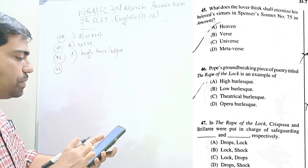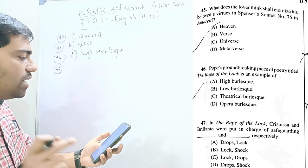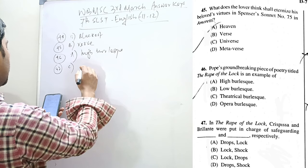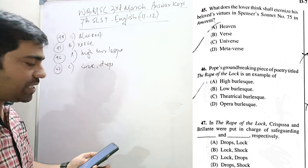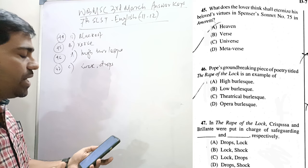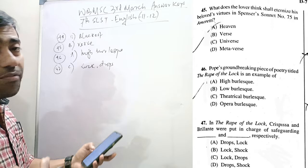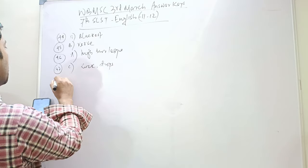In The Rape of the Lock, Crispissa and Brillante were put in charge of safeguarding Crispissa's locks, and Brillante for drops, for eardrops. So, lock and drops. And others too were Momentilla, I think, for watch, and Momentilla, and Brillante, Crispissa, Momentilla. Zephyretta for the fans. And the guardian seal was Ariel.